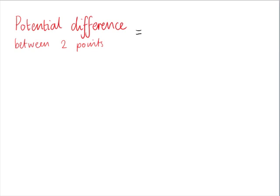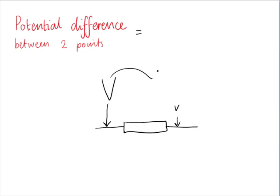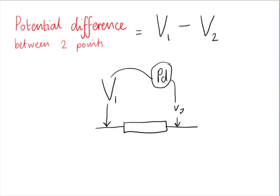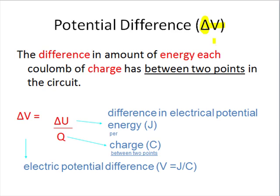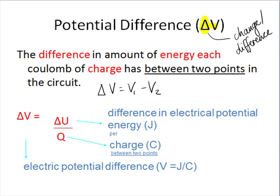Potential difference between two points means the difference in energy per charge between those points. We could say V at one point minus V at the other point equals the potential difference. The symbol for potential difference is delta V. Delta is the capital Greek letter D, written as a triangle, generally understood in science to mean 'change in' or 'difference in'. So delta V equals delta E — or delta U — per coulomb of charge.